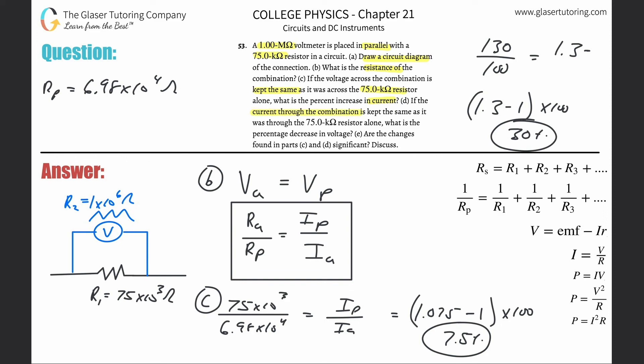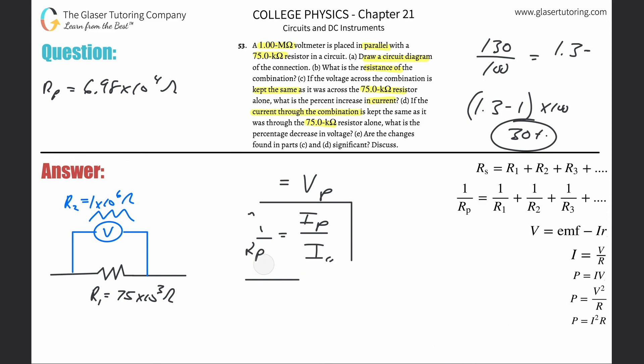So letter D, if the current through the combination is kept the same as it was through the 75 kiloohm resistor alone, what is the percent decrease now in the voltage? All right. So now what they're saying is that the current is the same. So let's start with the same idea. So the current here alone is going to equal the current in parallel. And again, using Ohm's law, we can just simply do a substitution in here. This means that the voltage alone divided then by the resistance alone should equal then the voltage in parallel divided then by the resistance in parallel.